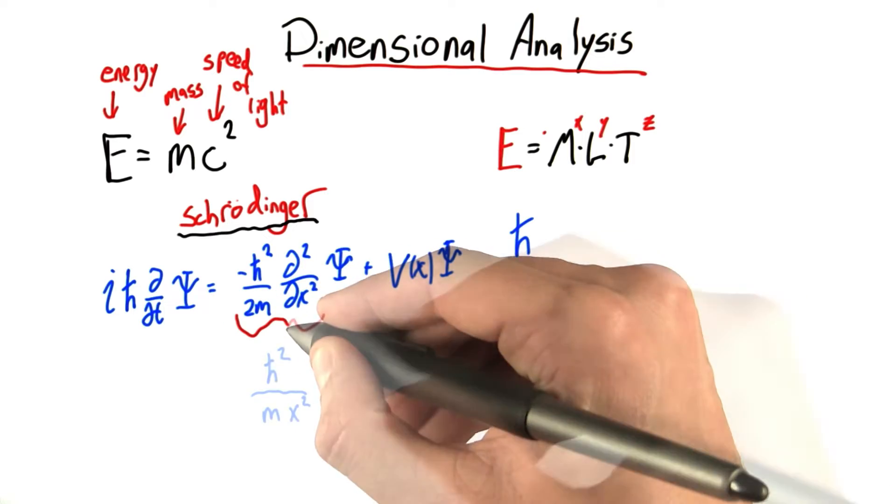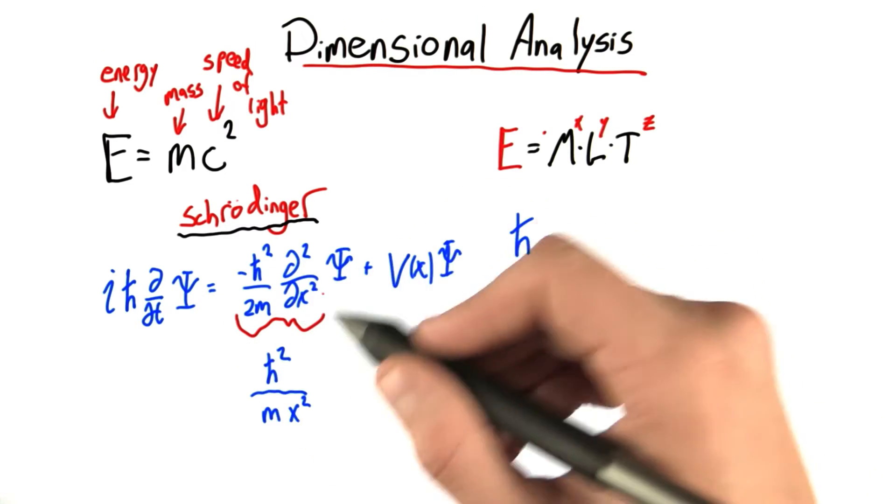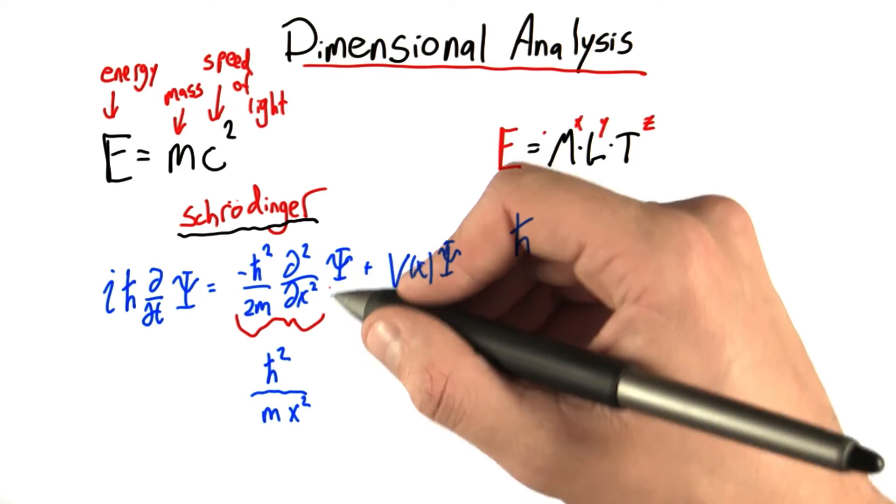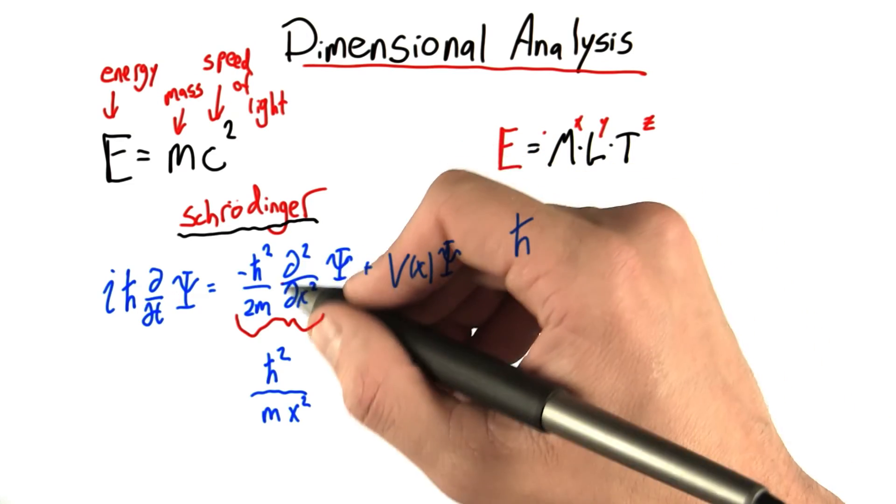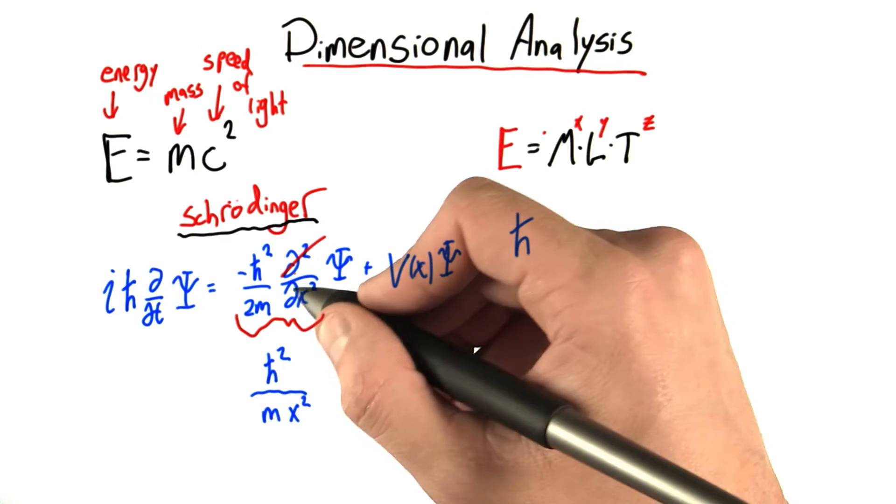Let's take a look at this term. Well, there's a lot going on in this term, but a lot of it doesn't affect the actual units of what's happening. For example, I don't have to pay attention to this guy at all. This is the Greek letter psi, and it's dimensionless, so we can ignore it. These d's are just some instructions of some math to do, so we don't have to pay attention to those either.